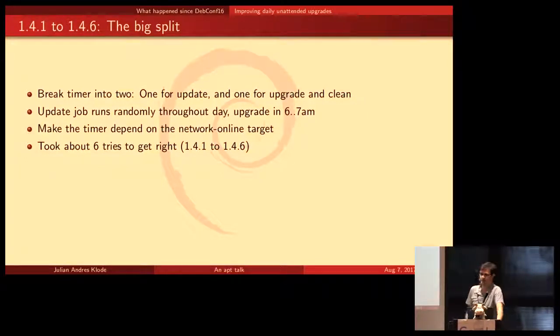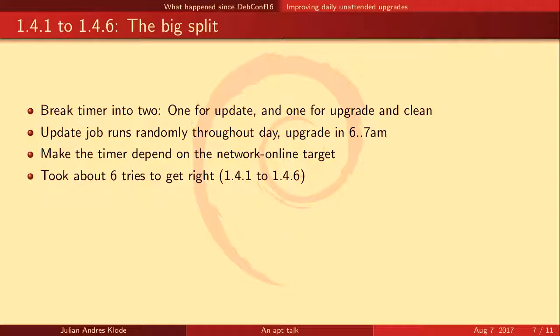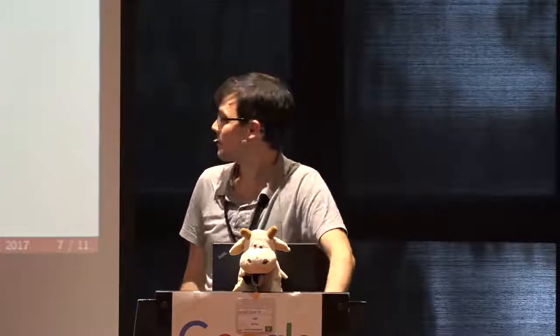Basically, we broke the timer into two timers: one for updating and the other for upgrading and cleanup of lists, packages, and so on. We made the update job run throughout the day randomly, but the upgrade job now runs at 6 a.m. plus or minus one hour. That way upgrades are reliable and always happen at the same time. The tradeoff is that if the update is distributed over 24 hours, multiple machines could install different upgrades — not entirely optimal, but the best we can get.